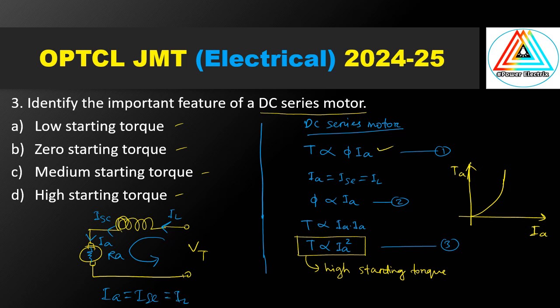Field current is directly proportional to Ia. Substituting, torque becomes proportional to Ia times Ia — that is Ia squared. This means high starting torque. The armature torque versus armature current graph confirms the answer is high starting torque.